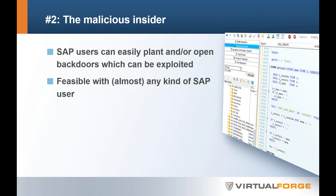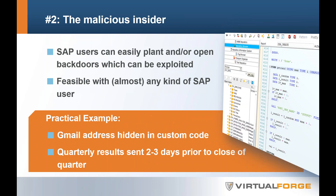Some backdoors can't be explained by accident. One practical example we found was a Gmail address hidden in custom code. When analyzed further, it turned out that quarterly financial results were being sent to that Gmail address two to three days prior to the close of the quarter. The employee who programmed this backdoor hadn't been with the company for years. It turned out reasonably well, but this is not something you want to see in your SAP system.